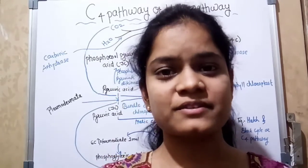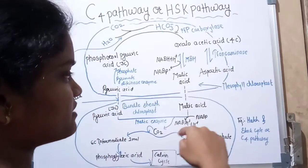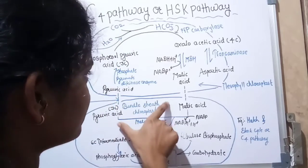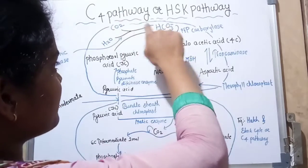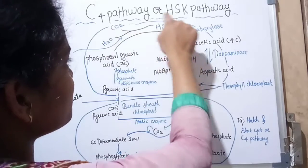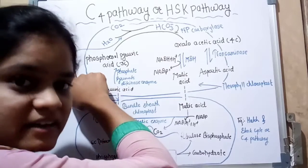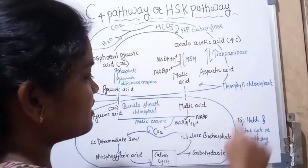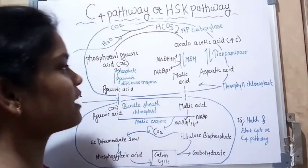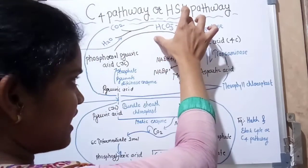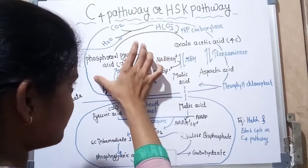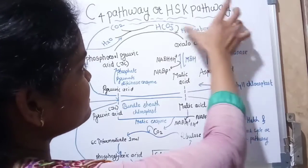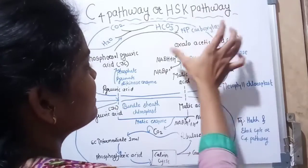Now let's discuss the C4 pathway cycle. This pathway runs in two locations: the mesophyll chloroplast and the bundle sheath cells. Atmospheric CO2 enters and combines with water, forming a dicarboxylic acid by the enzyme carbonic anhydrase — this is the first product, which is why this pathway is also called the dicarboxylic acid pathway. This dicarboxylic acid then binds with phosphoenolpyruvate (PEP), a three-carbon compound, to form oxaloacetic acid (OAA), a four-carbon compound, by the enzyme PEP carboxylase.